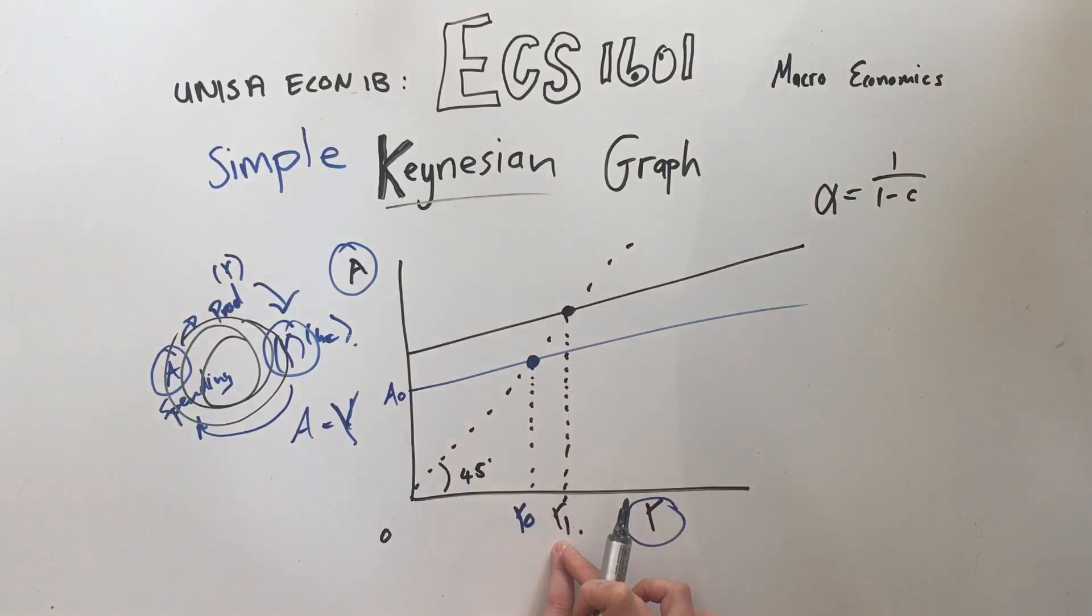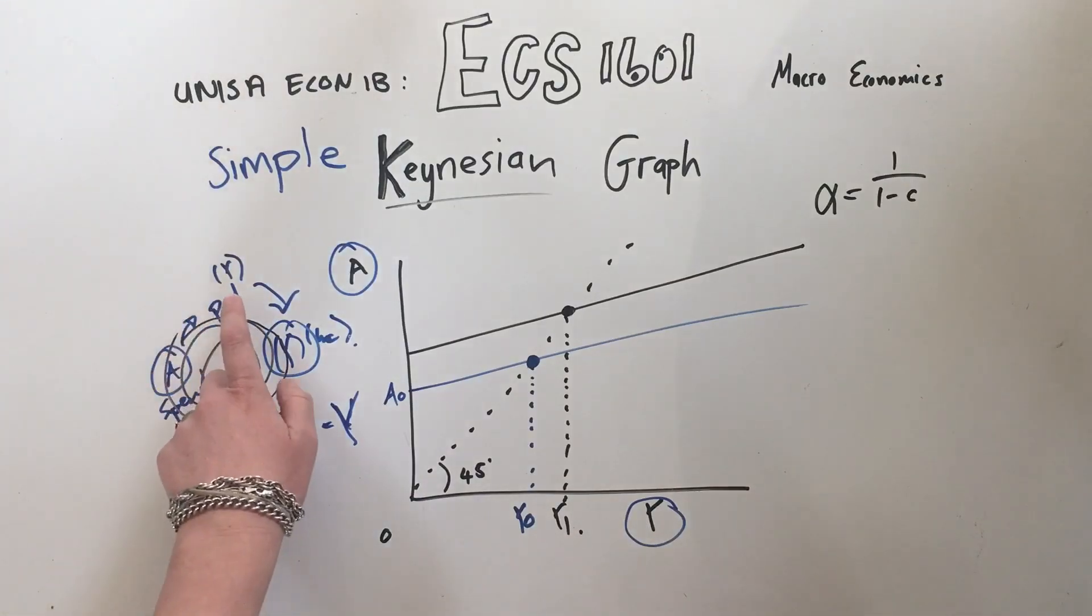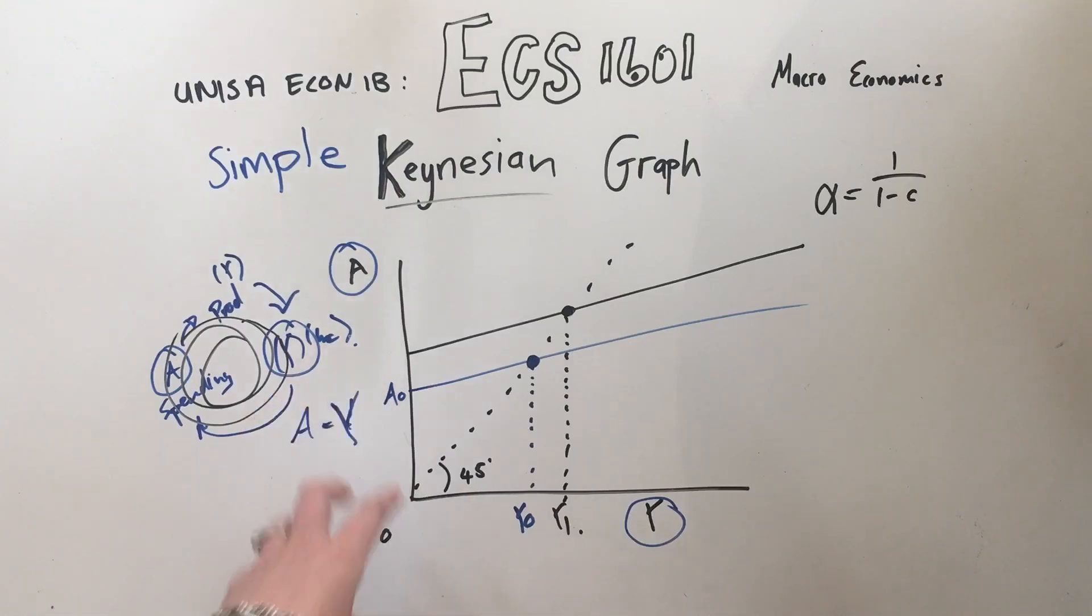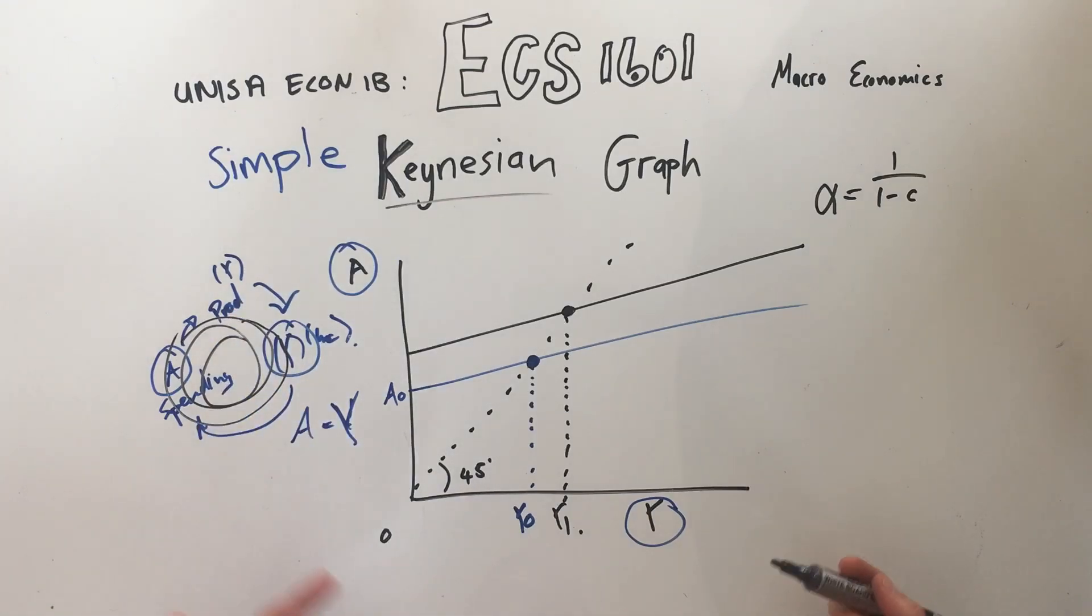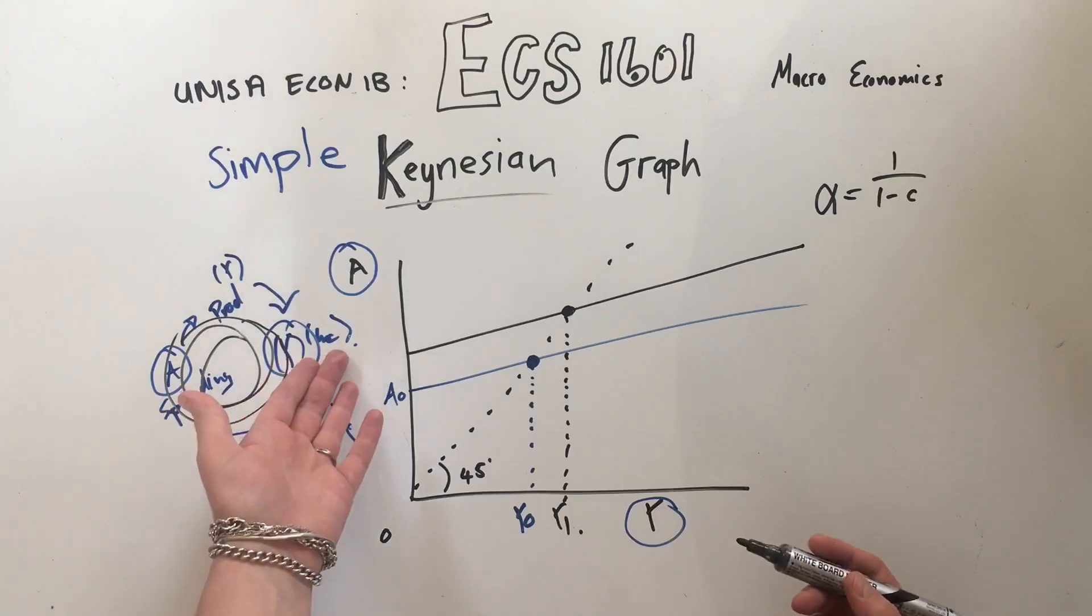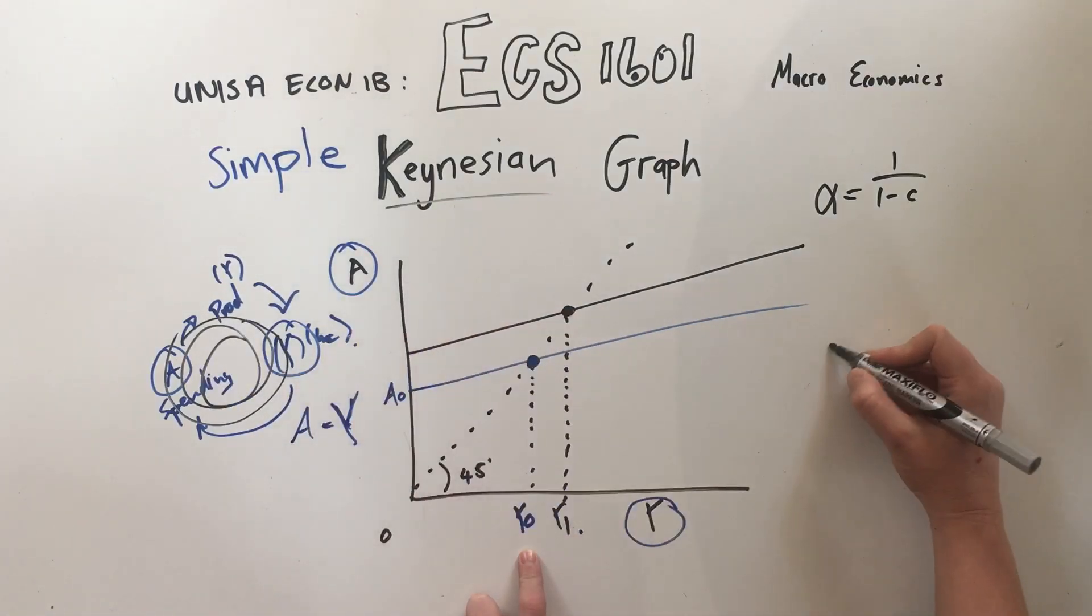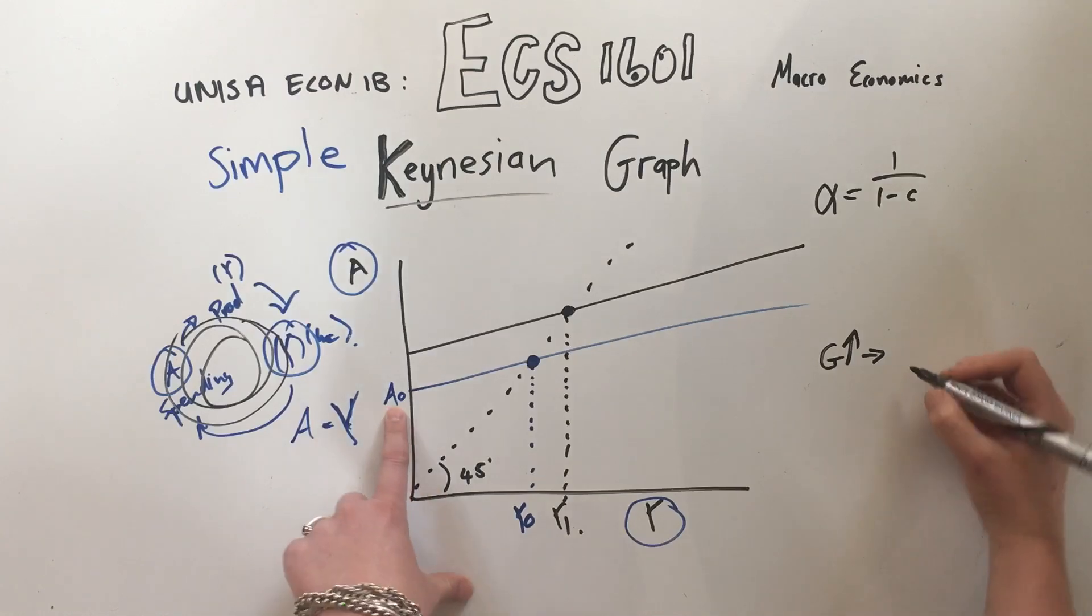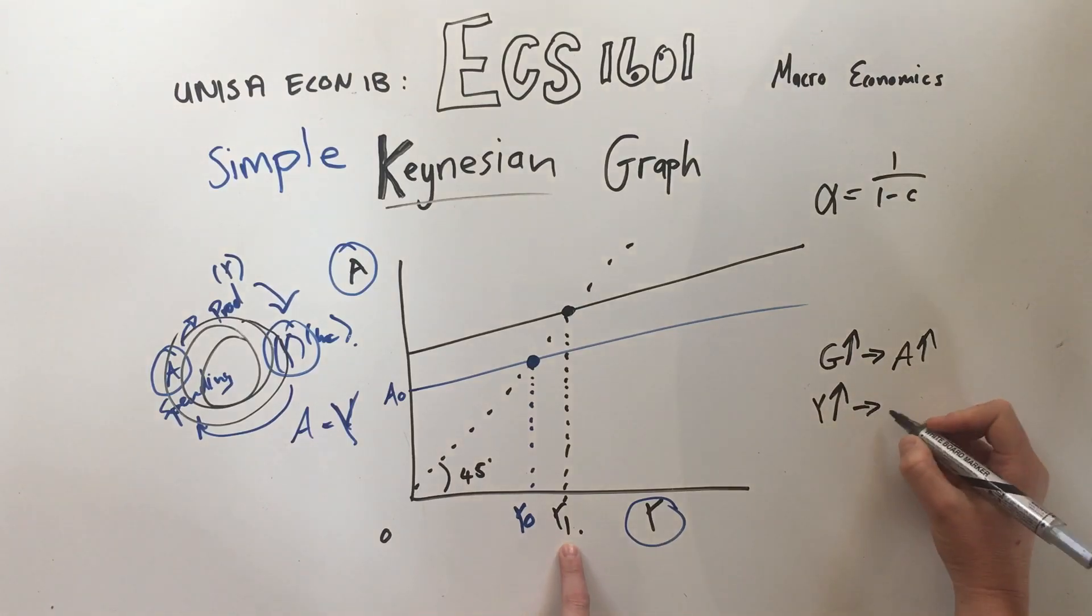Now when our equilibrium point of income goes up, it means that the Y in this is higher, so there's more production happening and there's more income happening. You can imagine for yourself that the only way to really produce that much more is to employ more people. So if the government increases their spending, that will lead to a higher A, which will lead to a higher Y, which will lead to less unemployment.